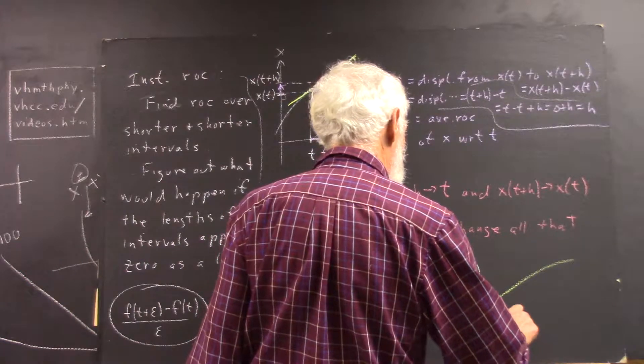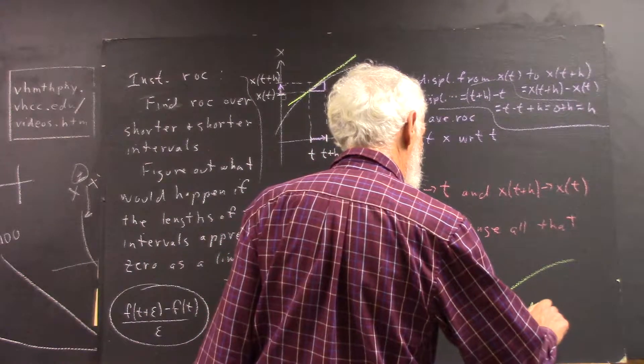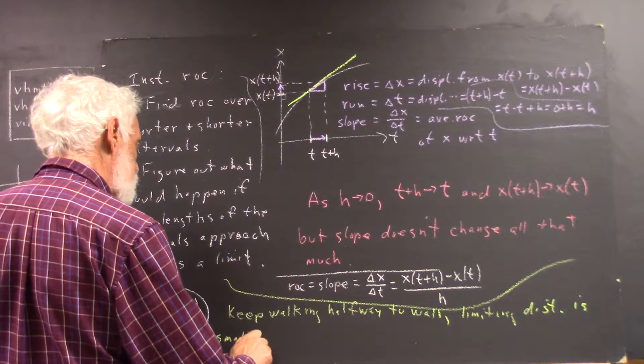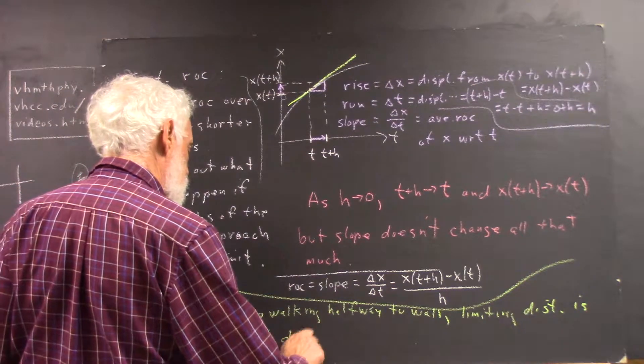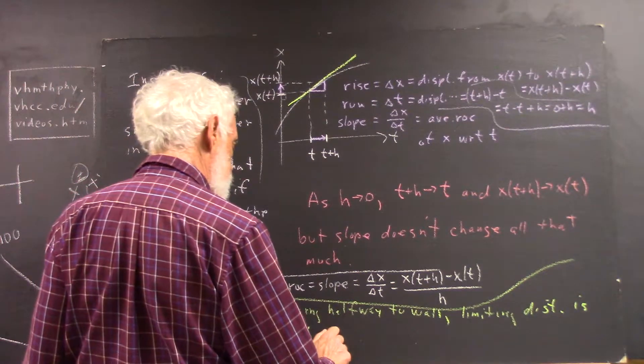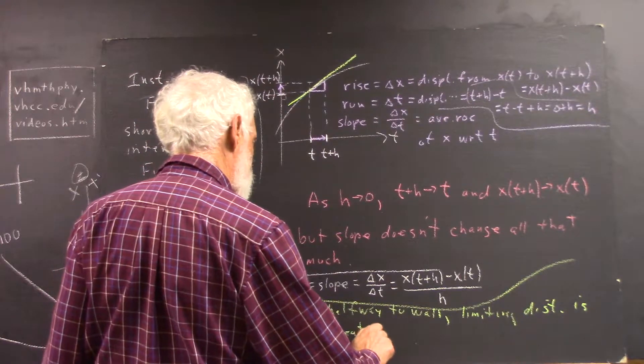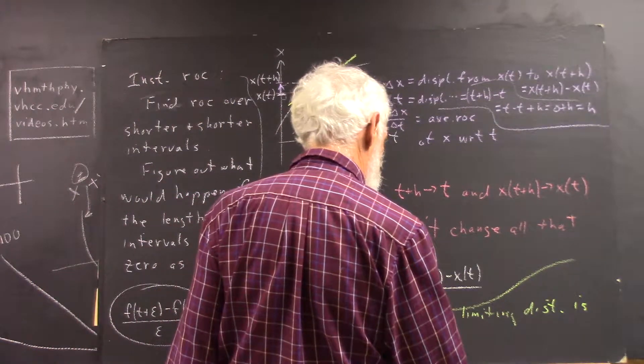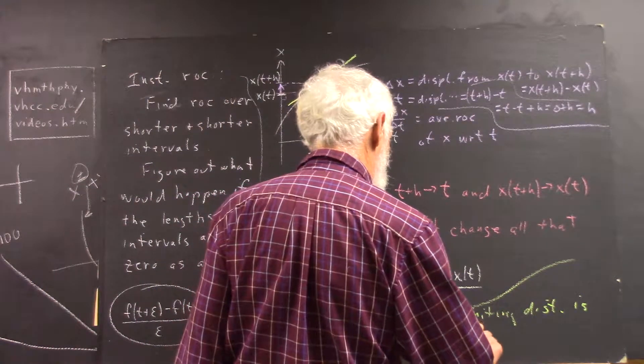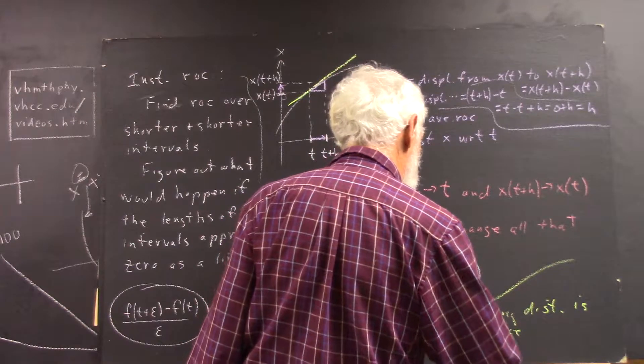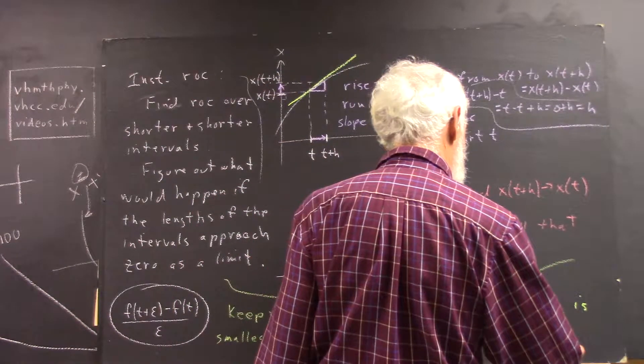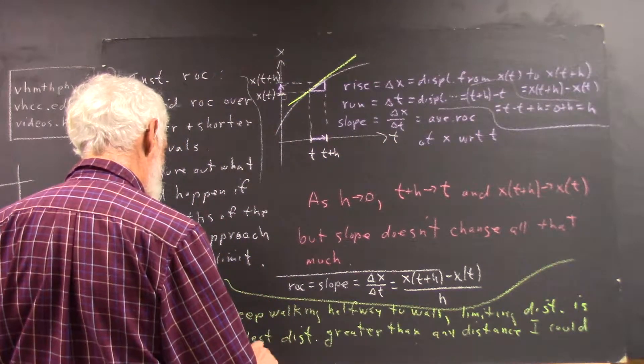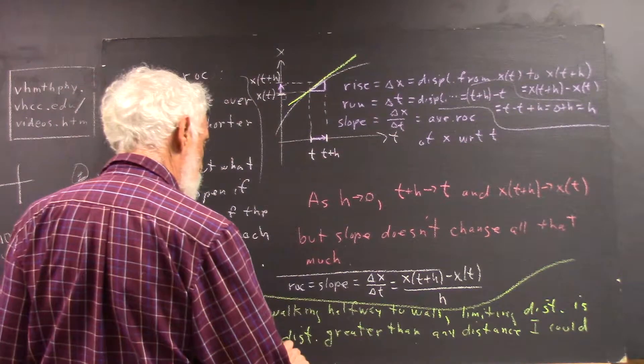the limiting distance is the smallest distance greater than any distance I could travel, no matter how long I have.